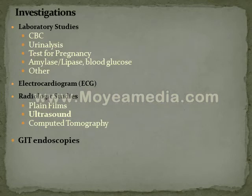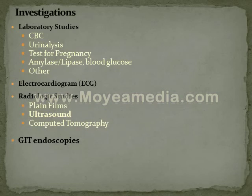Investigations for the cause of abdominal pain: laboratory studies include complete blood picture, urine analysis for urinary tract infection, pregnancy test, amylase and lipase or blood glucose for acute pancreatitis, ECG for cardiac causes, and others. Radiological studies and GI endoscopies are also used to search for GI disorders.